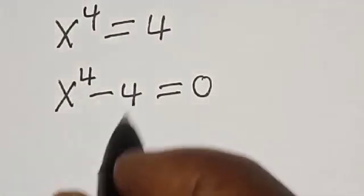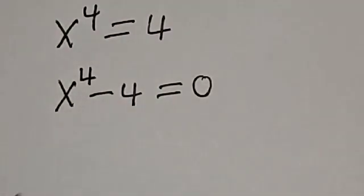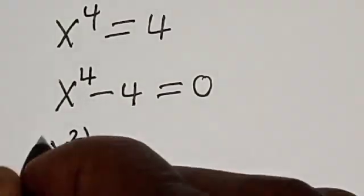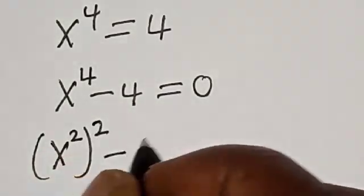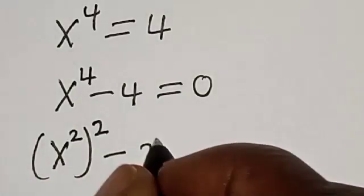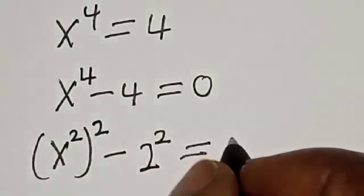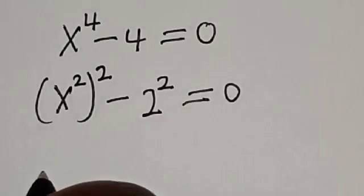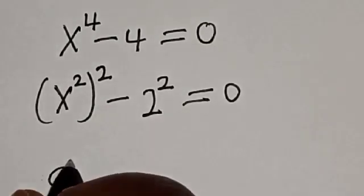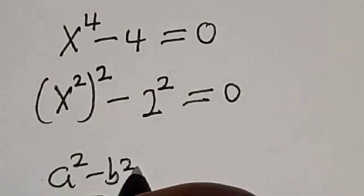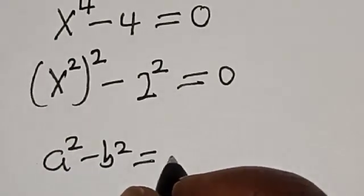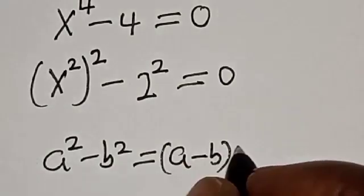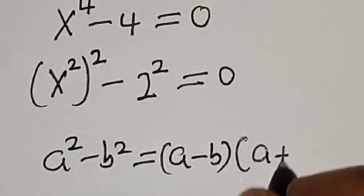We want to find the possible value of x. x to the power 4 minus 2 squared is equal to 0. This is a difference of two squares, that is: a squared minus b squared is equal to (a minus b) multiplied by (a plus b).